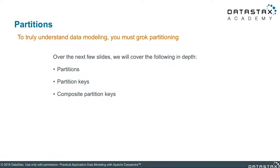Let's talk about partitioning and storage structure. Partitions are a really important topic for Cassandra data modeling. Not only do they give you some indication of where your data is in your data model, they also give you an indication of where your data is in the cluster. We're going to go through partitions, partition keys, and composite partition keys — these are all related but somewhat different topics.